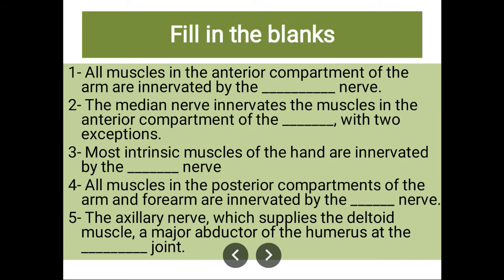Question five: the axillary nerve, which supplies the deltoid muscle, a major abductor of the humerus — at which joint? That is the glenohumeral joint.